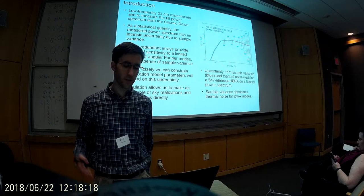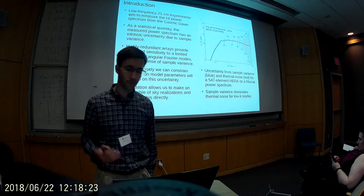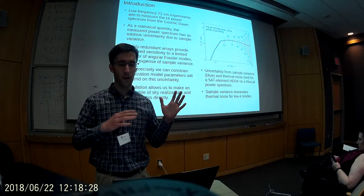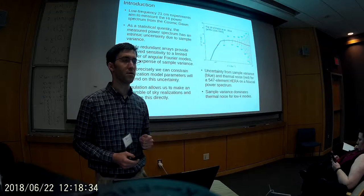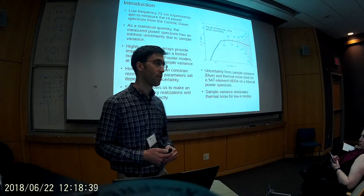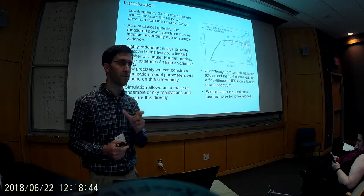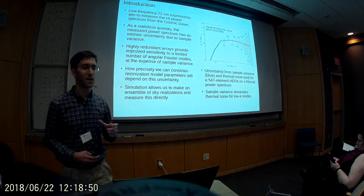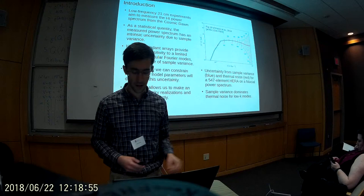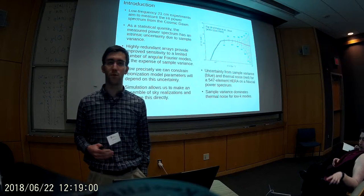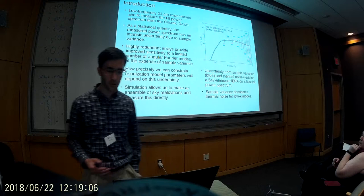As has been said, low-frequency 21-centimeter experiments are trying to measure the power spectrum from neutral hydrogen during the cosmic dawn. Considering that all foreground and systematic effects have been dealt with, we still have a fundamental uncertainty in the quantity we're measuring because it is a statistical measurement. And as we use highly redundant arrays, those redundant groups of baselines are all measuring the same angular Fourier mode, which means we're getting fewer independent samples of the power spectrum for a given instrument.